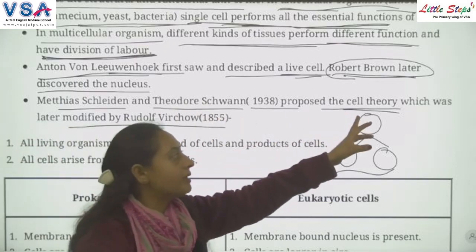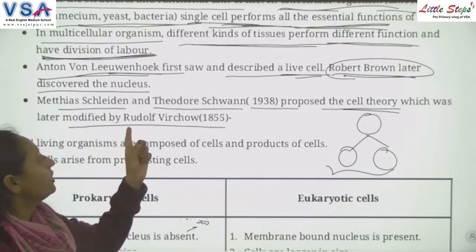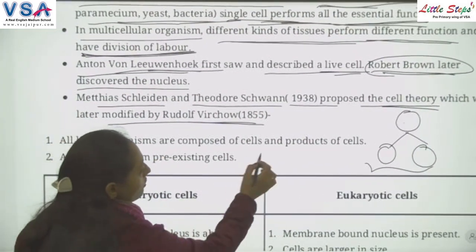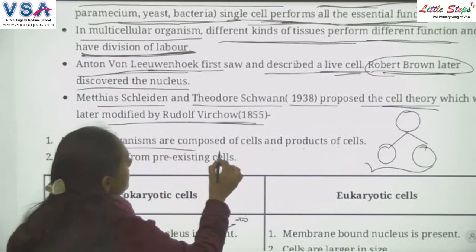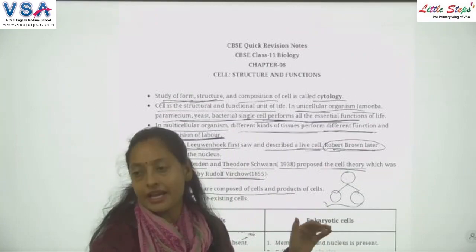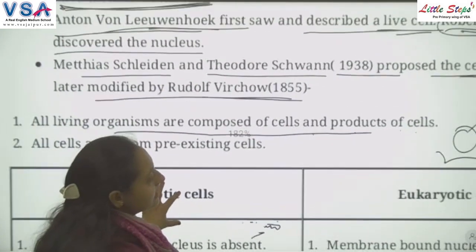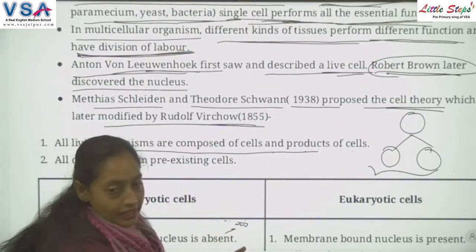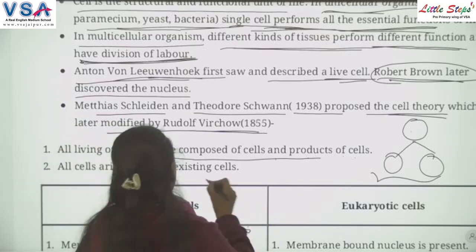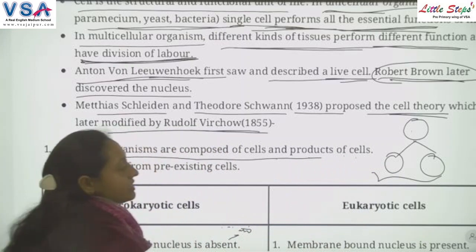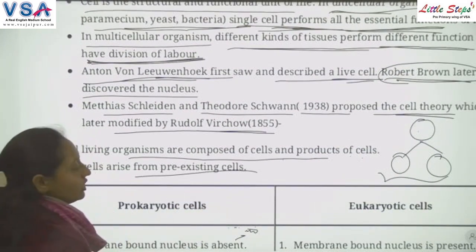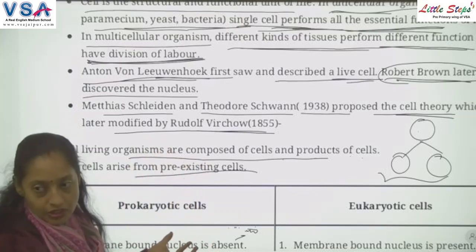Cell theory was first given by Schleiden and Schwann, and then modified by Virchow. According to Virchow, all living organisms are composed of cells and products of cells. All cells arise from pre-existing cells — this is Virchow's cell theory.